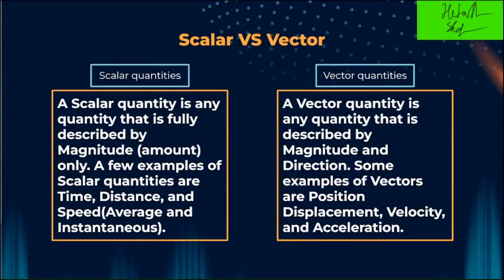Scalar vs Vector Quantities. A scalar quantity is any quantity that is fully described by magnitude, which just means a numerical amount. A few examples are time, distance, average speed, and instantaneous speed.